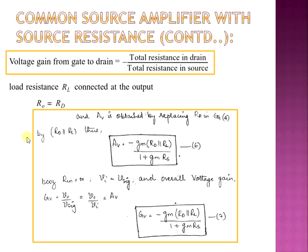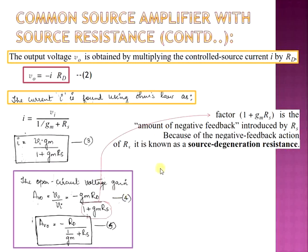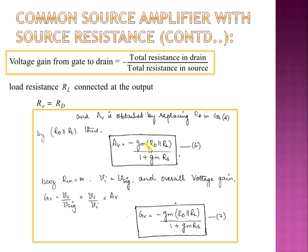When load resistance RL is connected at the output, R0 = RD. The gain of the amplifier is obtained by replacing RD with RD ∥ RL in equation 4: AV = −GM × (RD ∥ RL) / (1 + GM×RS), equation 6. Since input resistance is infinite and V_signal equals VI, the overall voltage gain GV = V0 / V_signal = AV, same as equation 6. Equations 6 and 7 are identical.